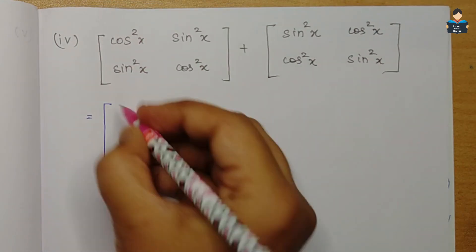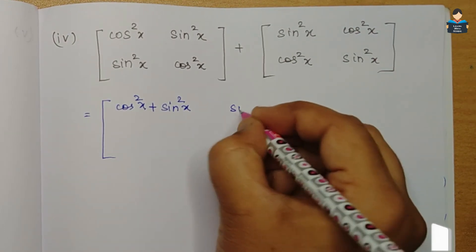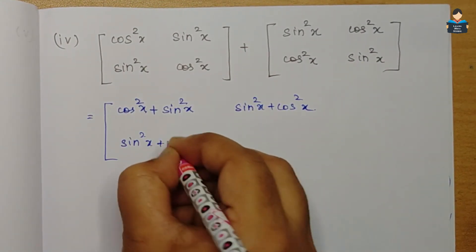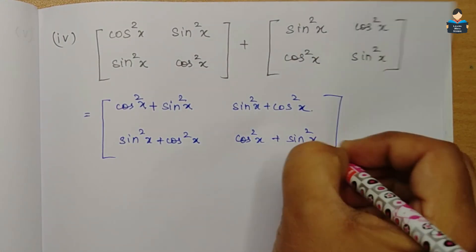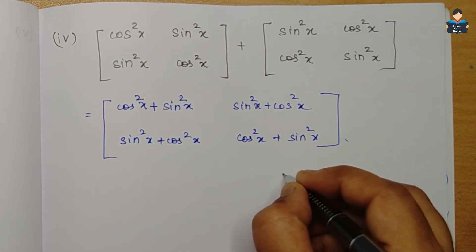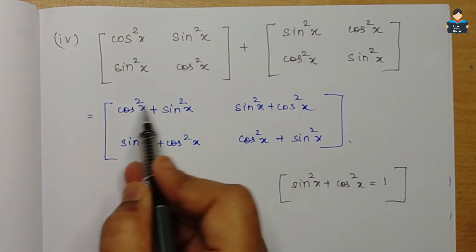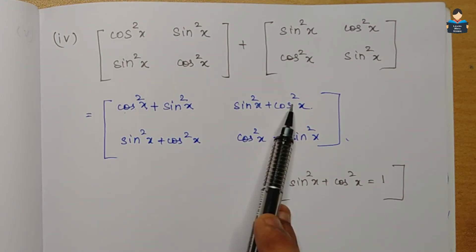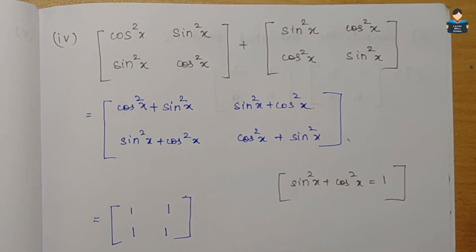Fourth subdivision: adding two matrices. First element: cos²x + sin²x = 1. Second element: sin²x + cos²x = 1. Third element: sin²x + cos²x = 1. Fourth element: cos²x + sin²x = 1. Using the trigonometric identity sin²x + cos²x = 1, the result is the identity matrix [1, 1; 1, 1].